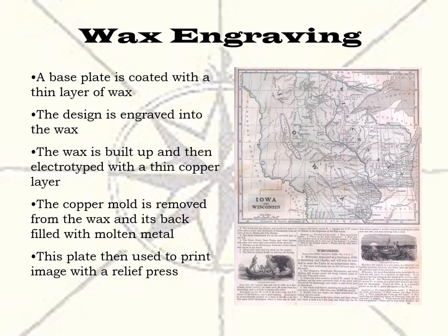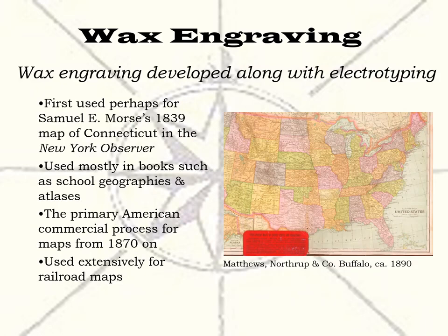To create a wax engraving, first a metal plate is heated and coated with a thin layer of a wax composition. The image is then transferred to the wax, and the engraver works on the wax surface to cut out the design using burins, needles, and other tools, as well as sometimes typeface. Once the image is cut into the wax, the raised surface is built up to a higher level, and then the surface is electrotyped with a thin copper shell over the wax. The copper shell is then removed from the wax, and the back is filled with about a quarter inch of molten metal, creating the final printing matrix, which could then be used on a regular relief press.